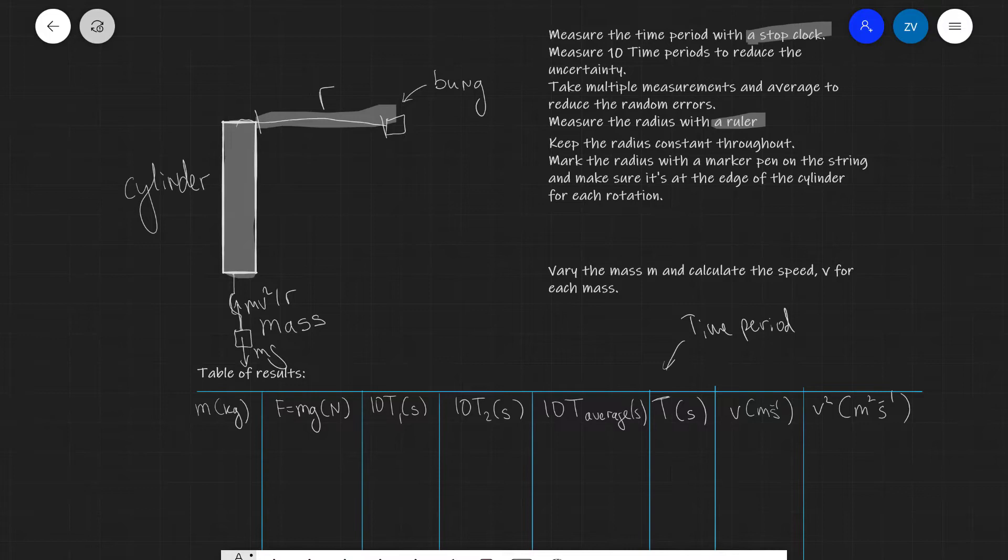After we have our time period we can actually find the speed at which the bung is going. In order to do so for this column we're going to use the equation that v is equal to 2 pi r divided by the time period. The quantity r we've actually measured with a ruler and t we've taken multiple measurements and we've averaged to find the time period.